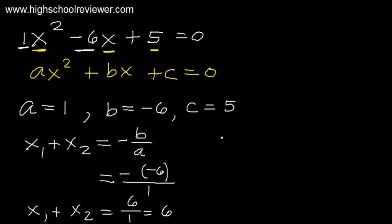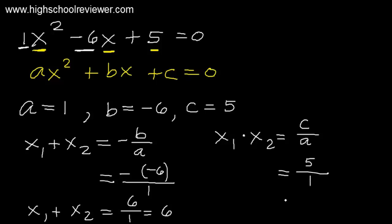Now for the product of the roots, x₁ times x₂, the formula is C over A. The value of C is positive 5, divided by A which is positive 1. So 5 divided by 1 is positive 5. Therefore, x₁ times x₂ equals positive 5, and x₁ plus x₂ equals positive 6.